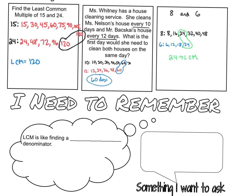What are some things helpful to remember about least common multiple? When we find the least common multiple, probably the most common use is finding a least common denominator. Anytime you've found a least common denominator in the past, that's like finding a least common multiple. For example, with 1 half and 3 eighths, if we want to find their least common denominator to add those fractions, I could make a list of multiples of 2 and 8: 2, 4, 6, 8 — and already I can stop because 8 is in both lists. So their least common denominator, or least common multiple, would be 8.